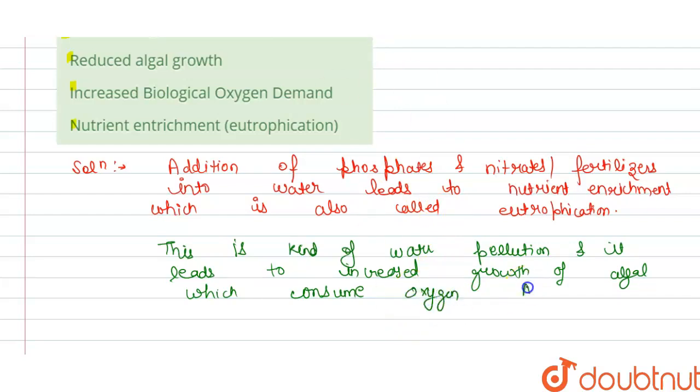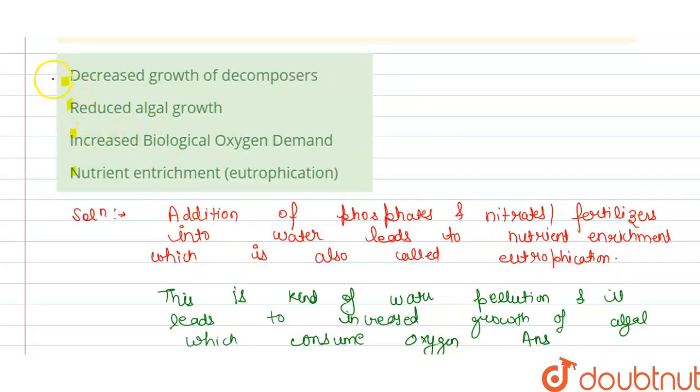So this is the answer for the question. Now we check which option is correct here. It will increase the growth of decomposers, increase the growth of algal, increased biological oxygen demand. So nutrient enrichment. This is incorrect.